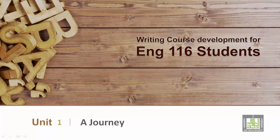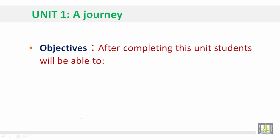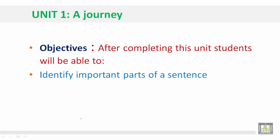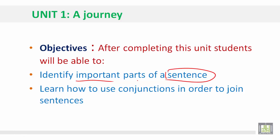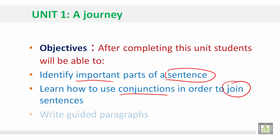Writing course development for English 116 students. Unit 1: A Journey. After completing this unit, students will be able to identify important parts of a sentence, learn how to use conjunctions in order to join sentences, and write guided paragraphs.